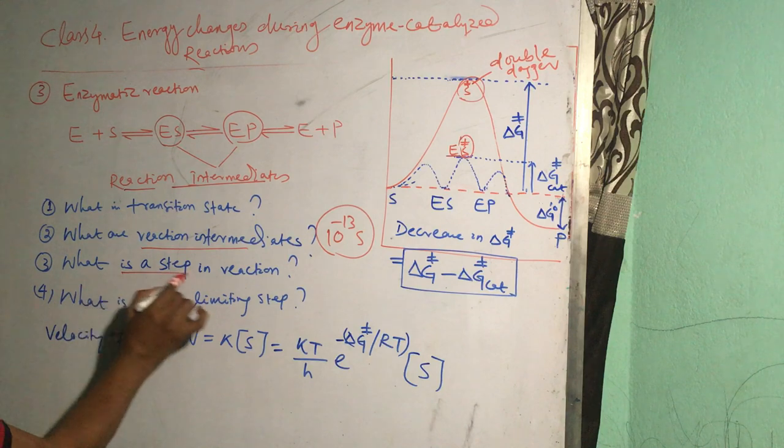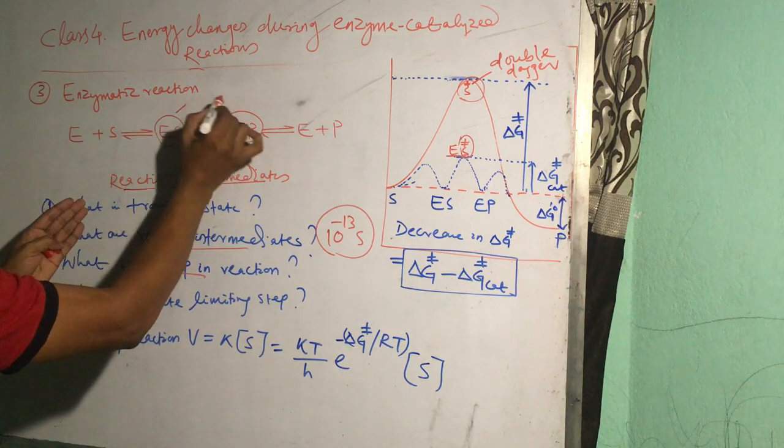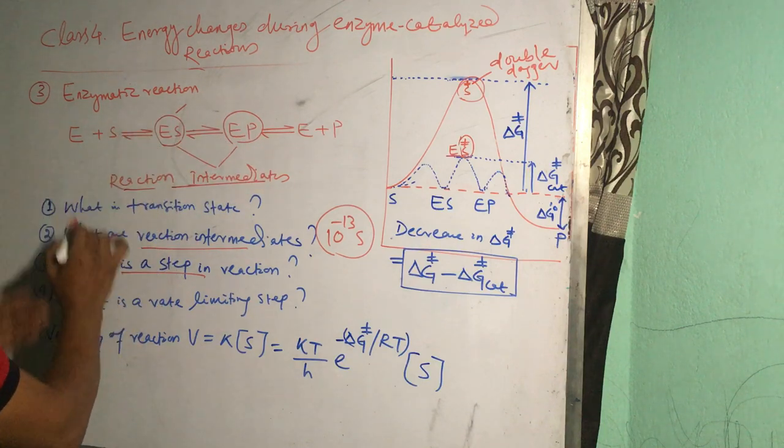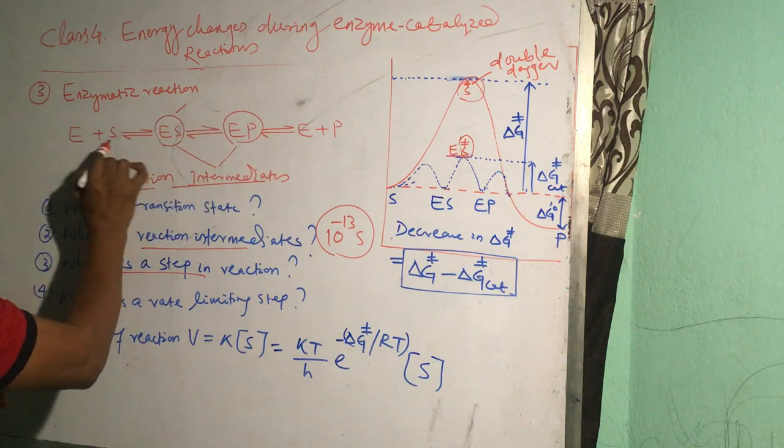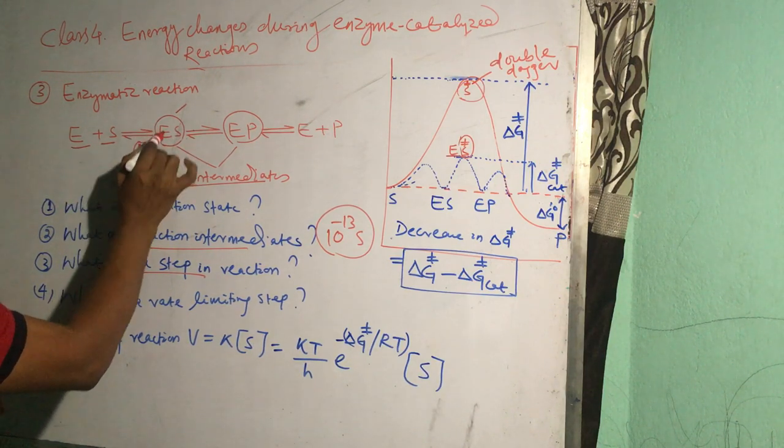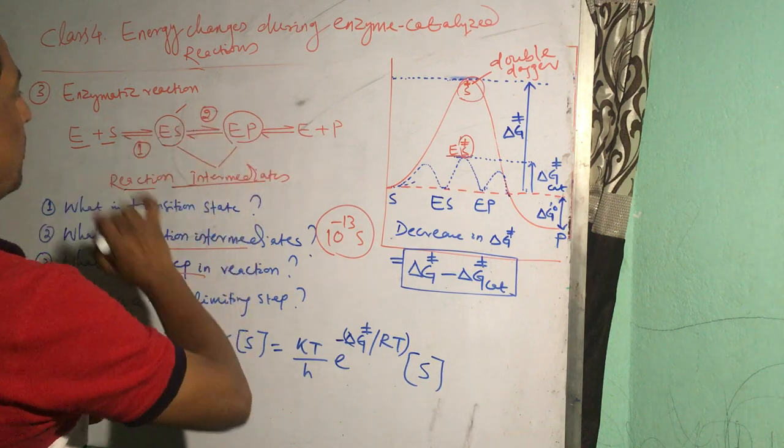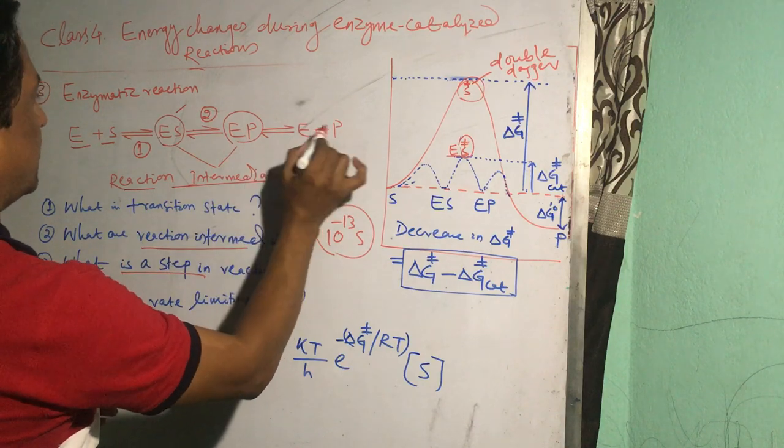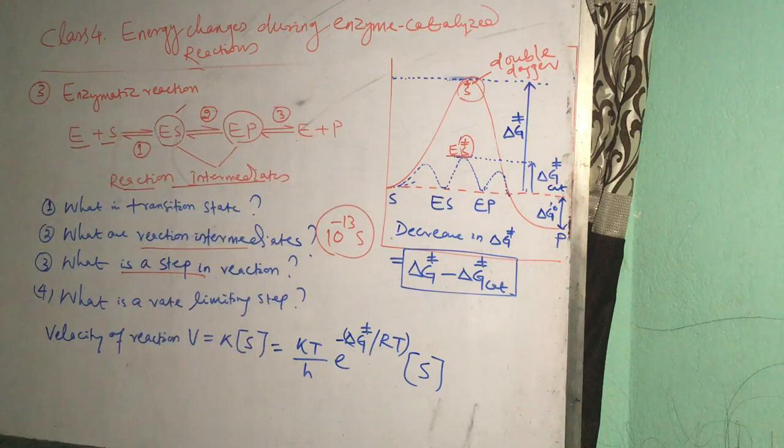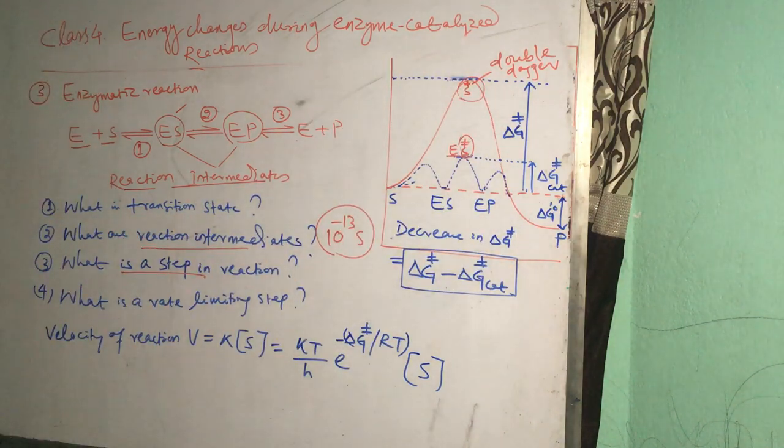So a step in a reaction is the conversion of one intermediate to another intermediate. The conversion of enzyme plus substrate to enzyme-substrate complex is step one; from enzyme-substrate complex to enzyme-product complex is step two; and from enzyme-product complex to free enzyme and product is step three. So there are three steps in this reaction. Out of these three steps, one step which has the highest energy barrier is termed the rate limiting step.